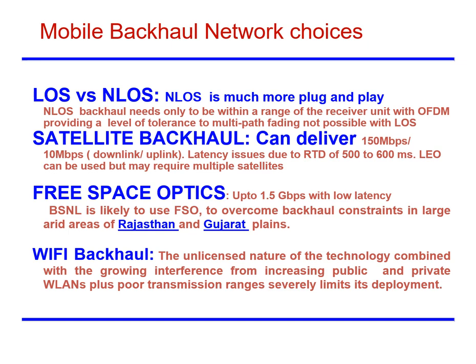Satellite backhaul can deliver 150 Mbps downlink or 10 Mbps uplink; however, latency issues arise due to a round-trip delay of 500 to 600 milliseconds. Low earth orbit satellites can be used to reduce latency but may require multiple satellites. Free space optics supports up to 1.5 Gbps with low latency. Wi-Fi backhaul exists, but the unlicensed nature of this technology combined with growing interference from increasing public and private WLANs and poor transmission ranges present severe challenges.